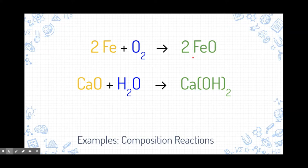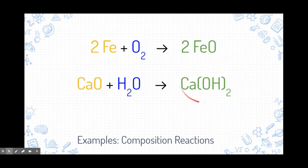Now the second example is a little bit more complicated, but there's something we need to learn from it. Here we have calcium oxide as our first reactant, and then we have water as our second reactant. Notice we're not just taking calcium oxide and setting it right next to water — all of these molecules rearrange and form a brand new product called calcium hydroxide. This is true for all types of reactions: we're not just taking two things and setting them next to each other, we are rearranging them.